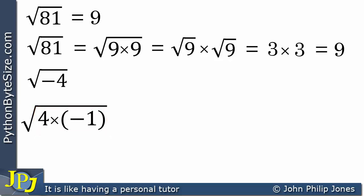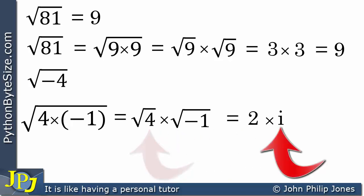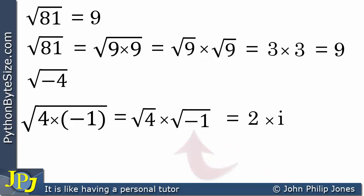Following the same approach I used above, I can now say that this is equal to the square root of 4 times the square root of minus 1. We know the square root of 4 is 2, and for the square root of minus 1 we can replace that with i. So we end up with it equaling 2 times i, where this 2 is the square root of 4 and i is the symbol replacing the square root of minus 1.